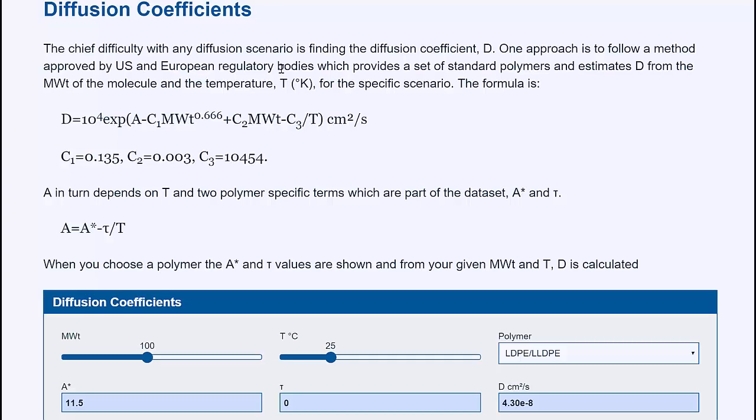Well, if you can't measure them, then you can at least estimate them using this formula, which is sort of approved by US and European regulatory bodies. So D, the diffusion coefficient, is estimated from the molecular weight of the molecule and the temperature at which the diffusion is taking place.